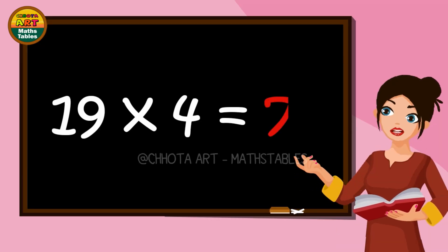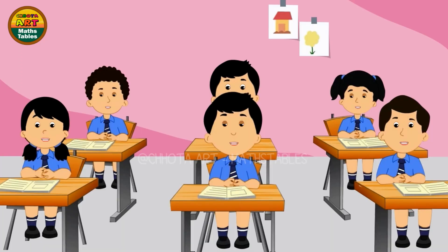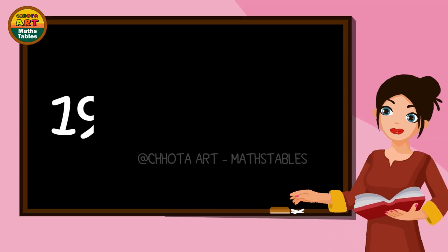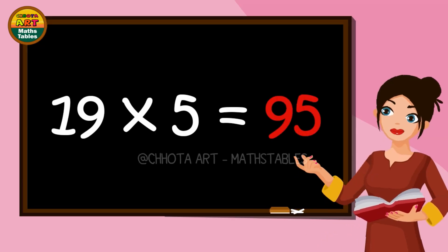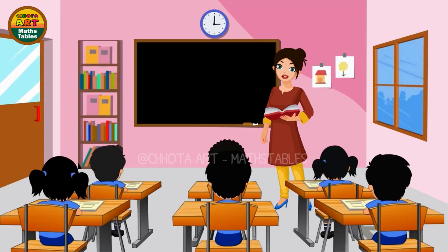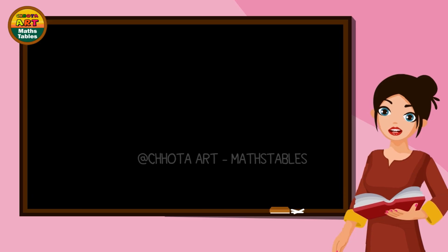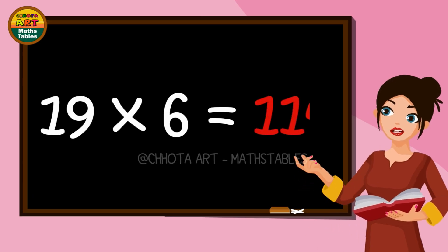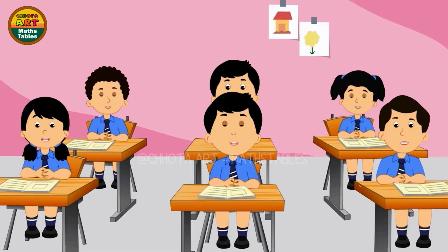19 fours are 76. 19 fives are 95. 19 sixes are 114.